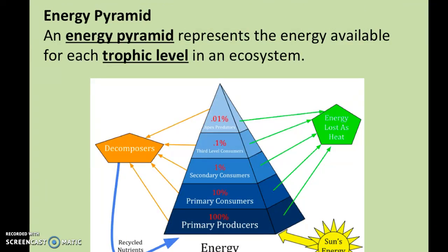On your notes: energy pyramids. An energy pyramid is the first representation of a trophic level pyramid or ecological pyramid. It represents the energy available in the ecosystem for each of your trophic levels. In this energy pyramid, the energy from the sun is what provides energy for the ecosystem — that's the case with most ecosystems on Earth. The sun is going to either directly or indirectly provide that energy. So the energy is being passed up the food web, up this food pyramid.